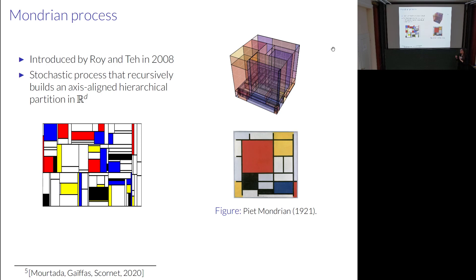An important class of purely random forest variants are generated by what's called the Mondrian process. In machine learning, the Mondrian process was introduced by Roy and Teh in 2008. It's a stochastic process that recursively builds an axis-aligned hierarchical partition over time, and is well-defined in any dimension D. It's named for the painter — and here is a two-dimensional sample of a Mondrian process that has been rendered to look like a Mondrian painting.